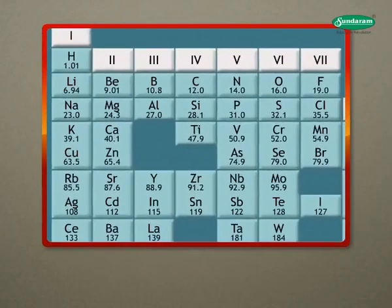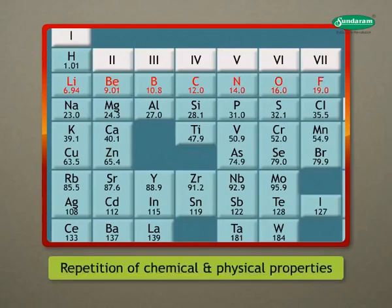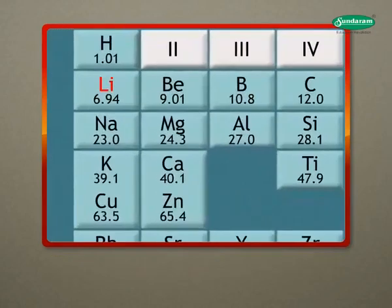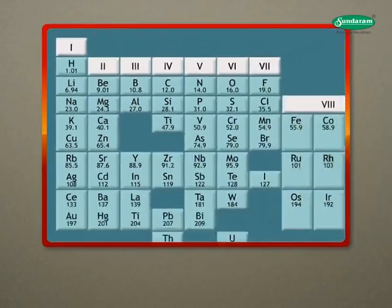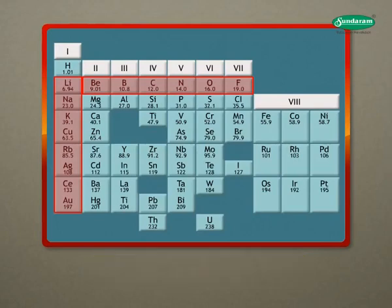He arranged elements in the increasing order of their atomic masses and found that the chemical and physical properties of elements showed repetition after certain intervals. Elements lithium, sodium and potassium show similar properties. He arranged known elements in the increasing order of their atomic masses in horizontal rows until he encountered an element which had properties similar to the first element. He placed this element below the first element and thus started the second row of elements.